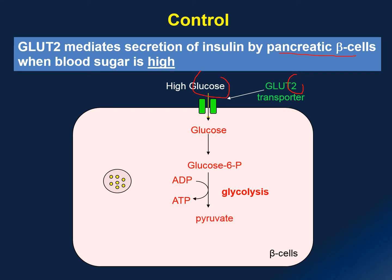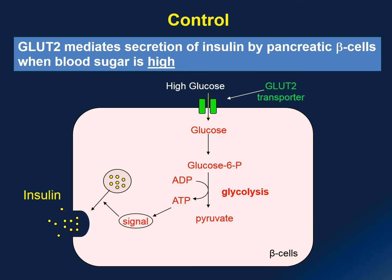With the transport of glucose into the beta cells, glucose undergoes glycolysis to produce ATP molecules. As the ATP level increases within the beta cells, it stimulates a cascade of reactions, which ultimately leads to the secretion of insulin hormone, suppressing your blood sugar level.